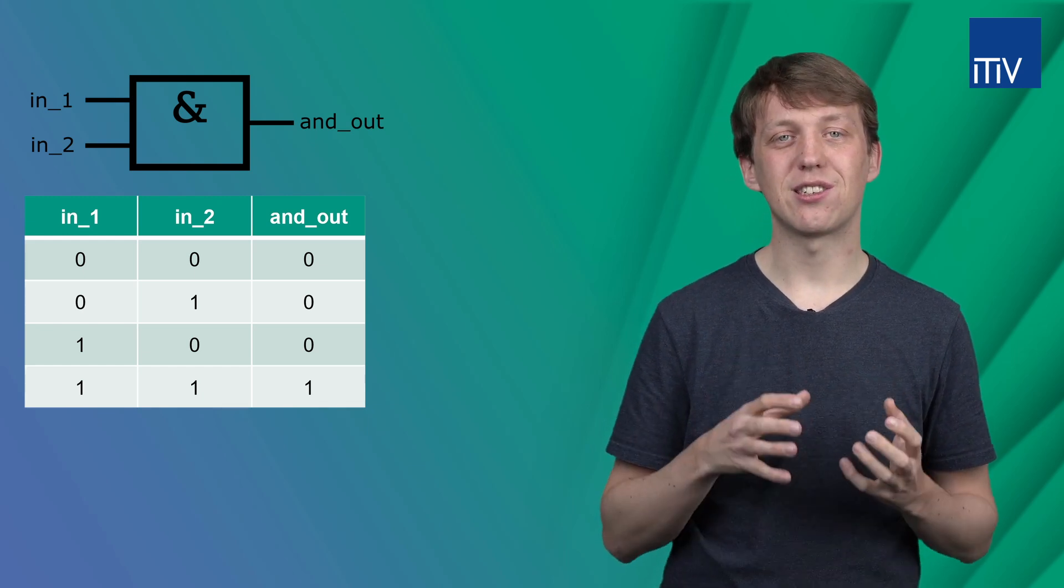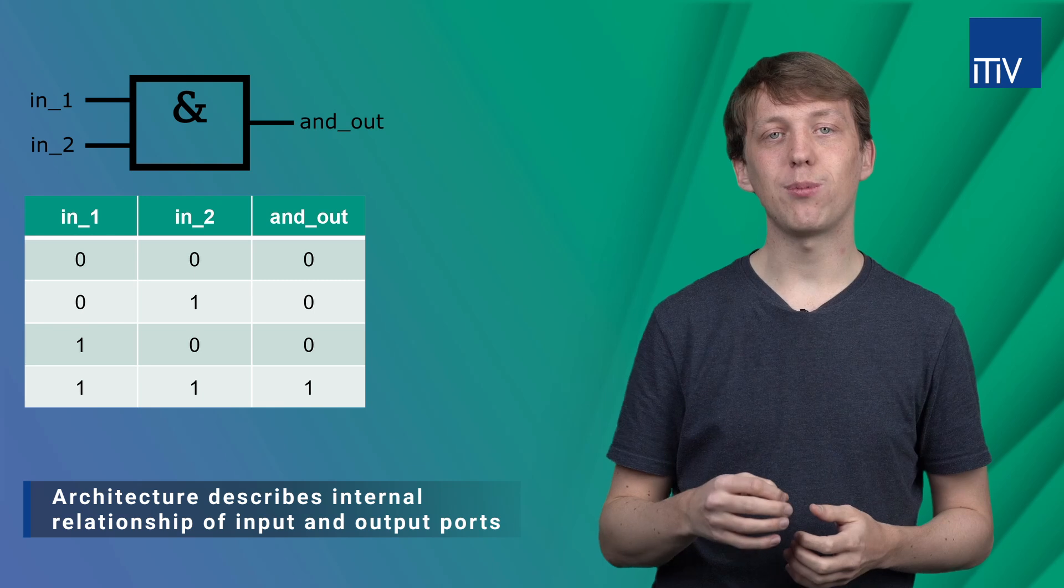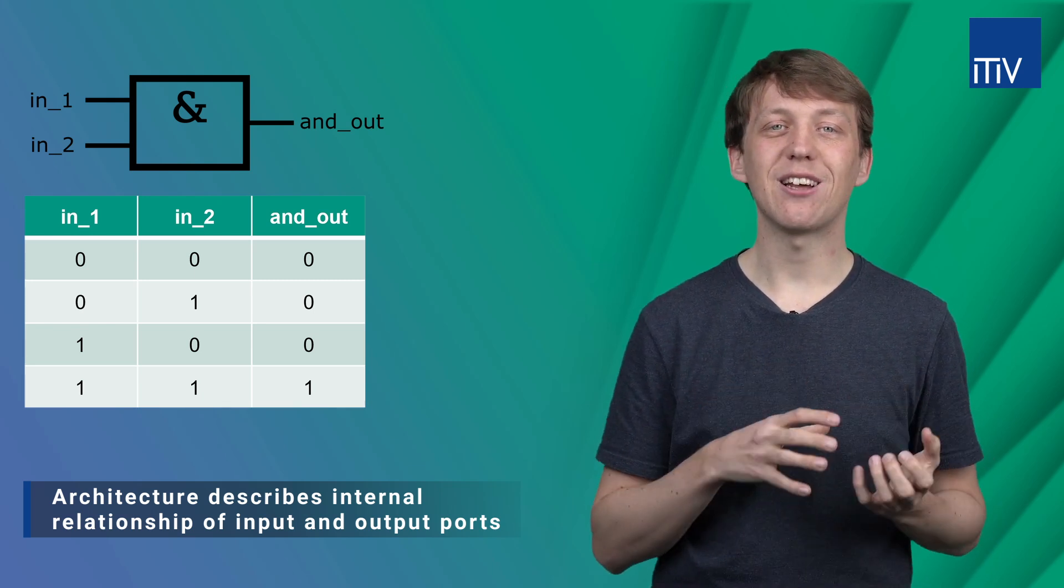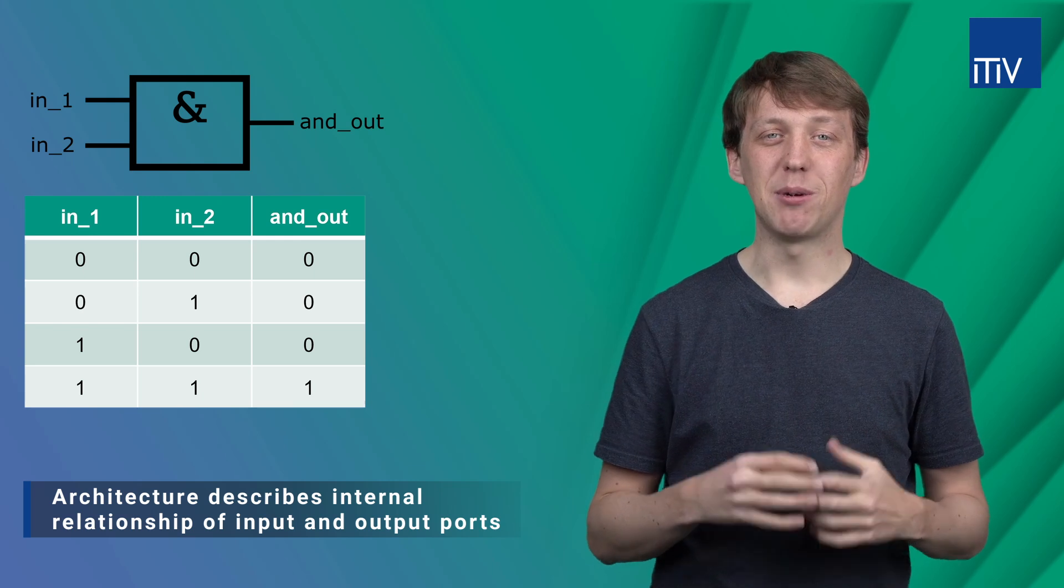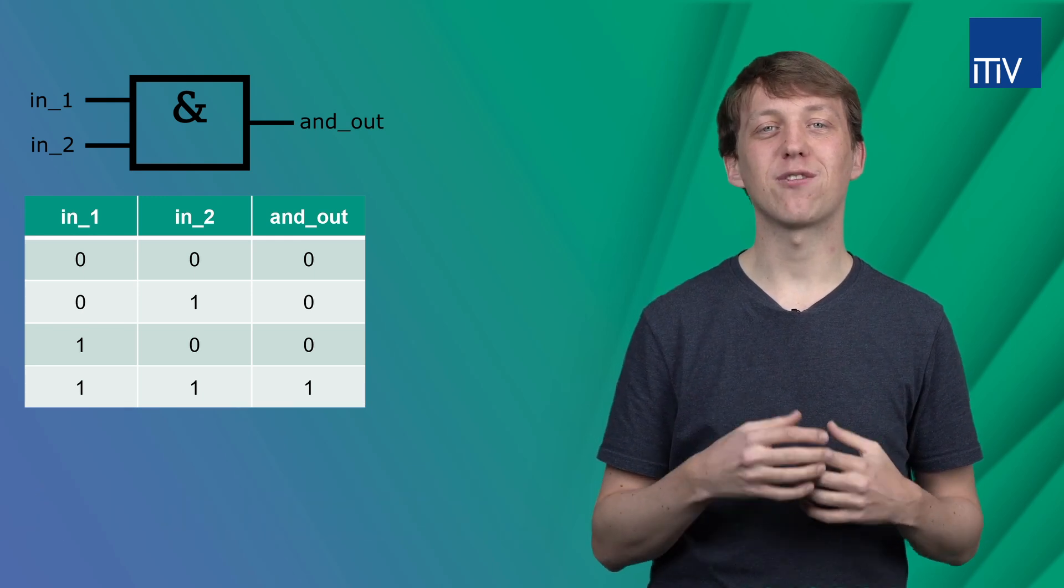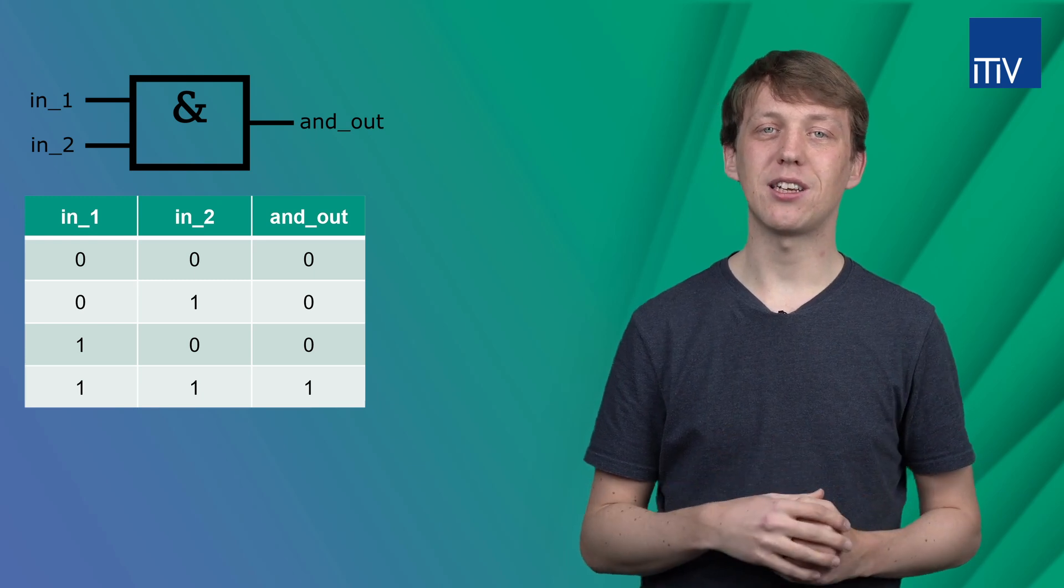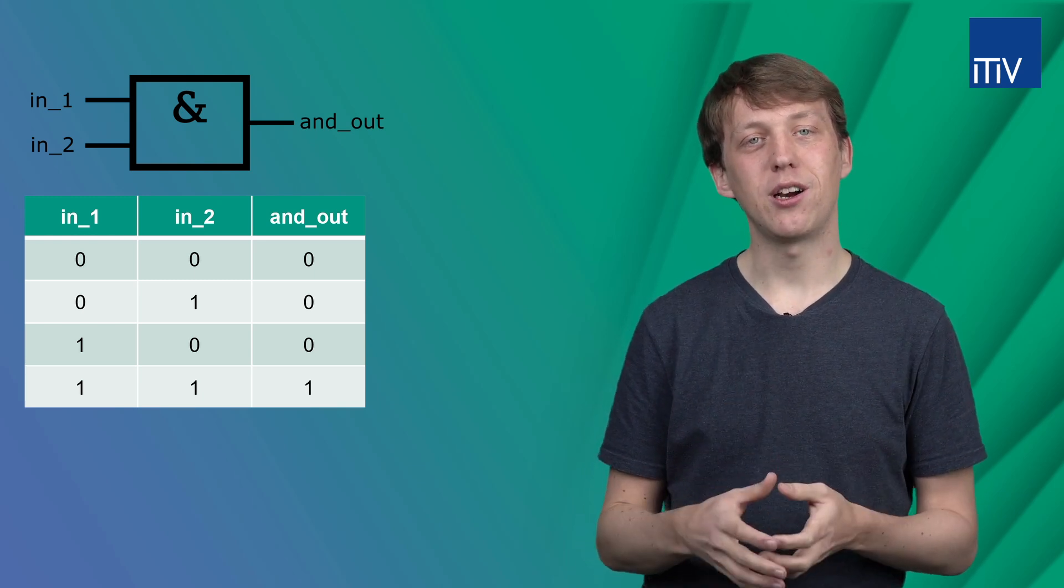The architecture assigned to an entity describes the internal relationship between input and output ports. But it only describes the expected functionality of the circuit without any direct indication as to the hardware implementation.